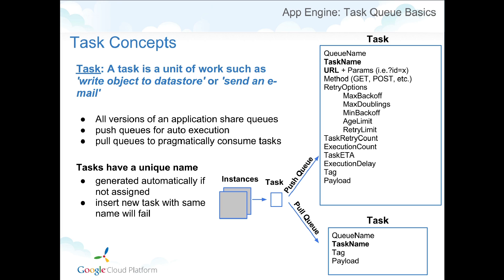For example, if the user runs a web page that does something and then sends an email, it doesn't make sense for that user to sit there waiting for that email to be sent. Task Queue is a great way to take that piece of work and put it on a different queue while it automatically processes in the background, while the user's request continues processing.